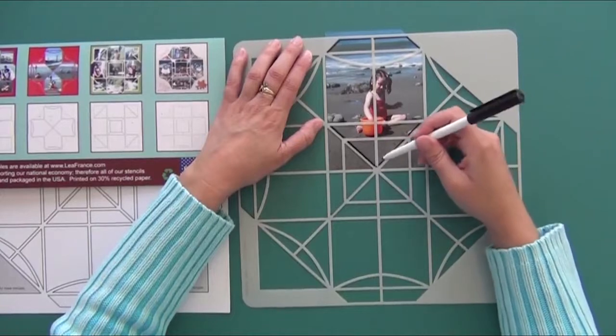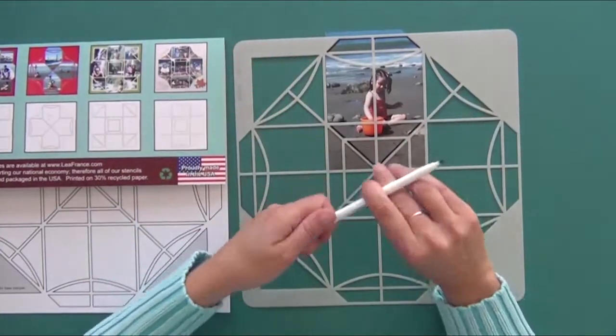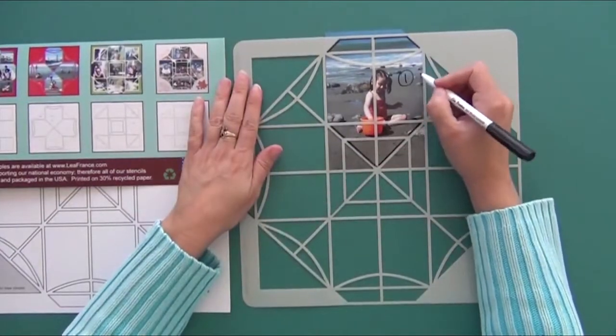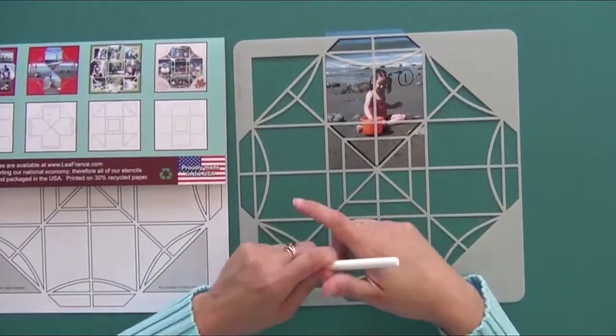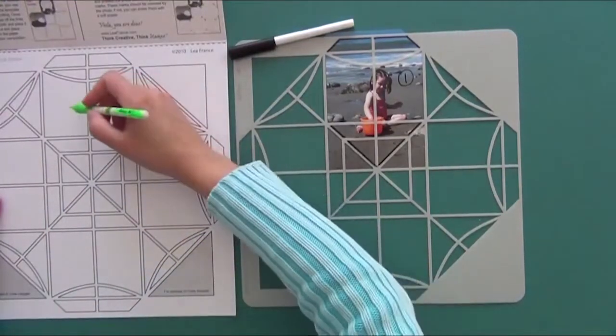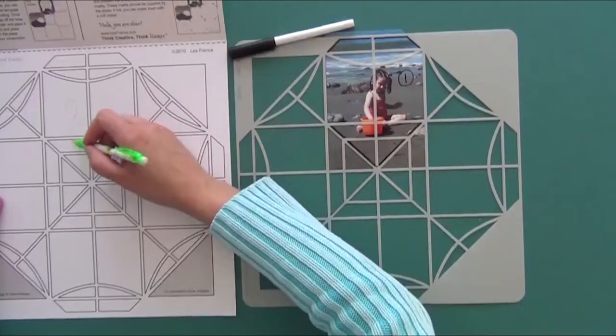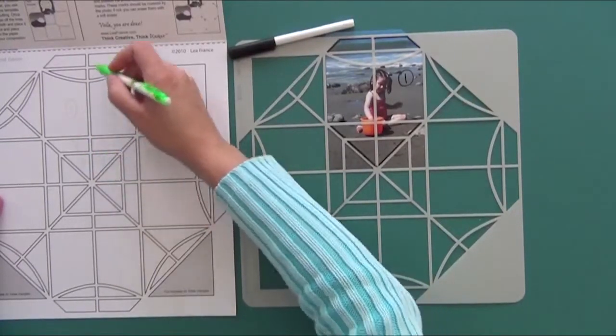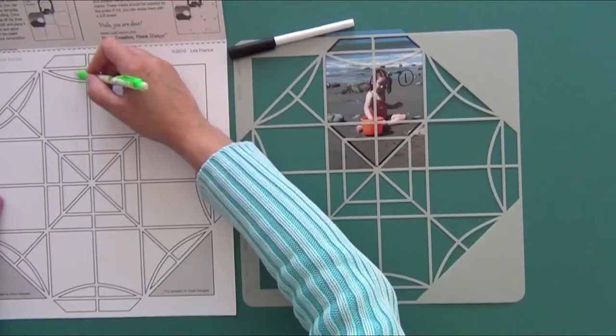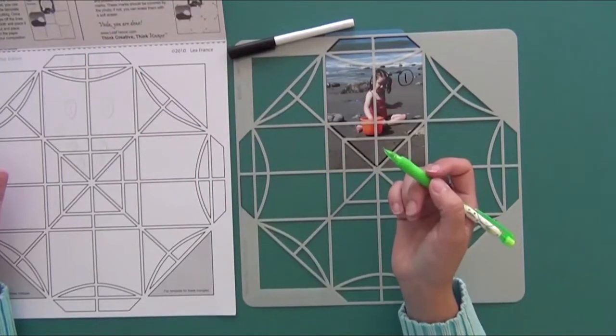I trace on my photo and now what you do is write number one on that photo, take a pencil, and on your paper template, you can write number one in the corresponding space, or you can do another way.